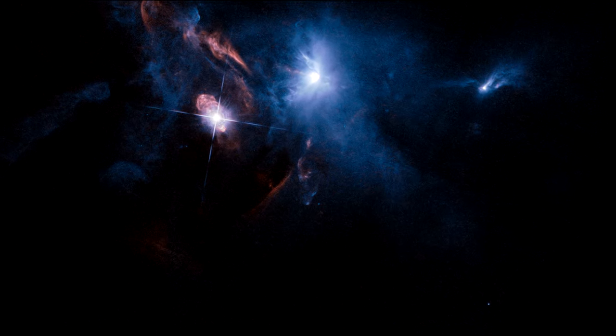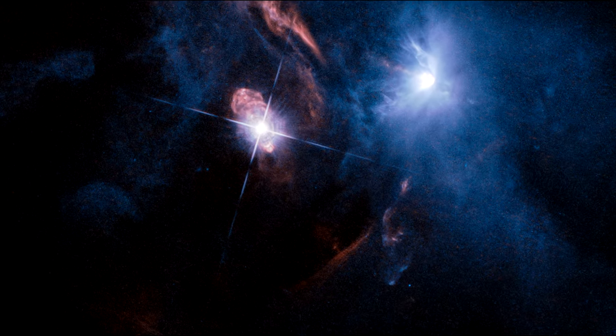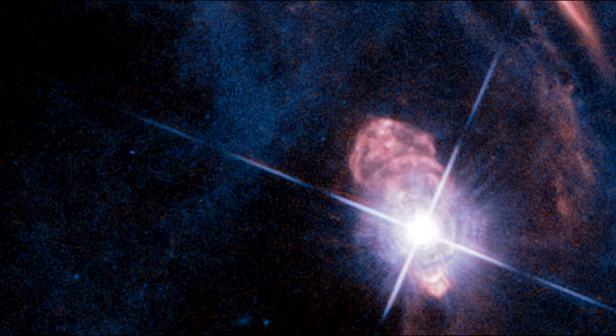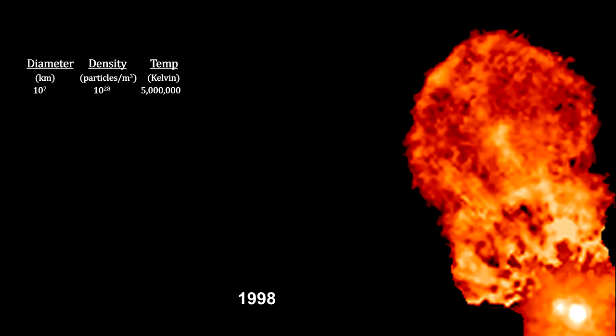XZ-Tauri is actually a binary star system. It is expelling hot bubbles of gas into the surrounding space. Gas from an unseen disk around one or both of the stars is channeling through magnetic fields surrounding the binary system and forced out into space at nearly 540,000 kilometers per hour or 300,000 miles per hour.